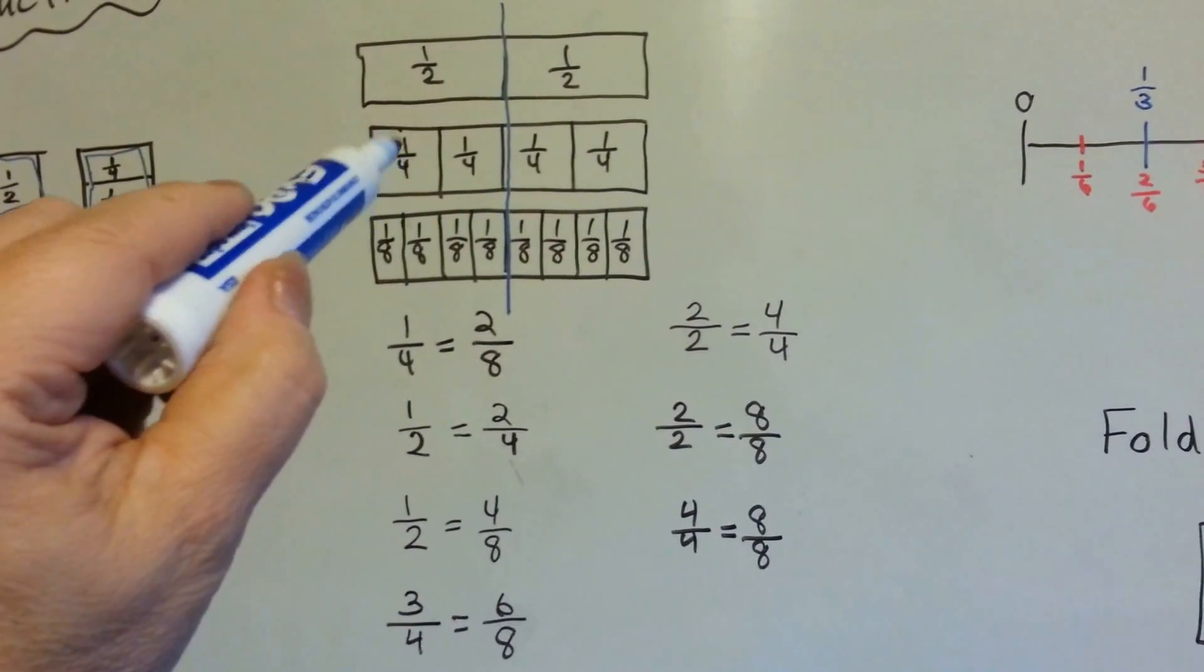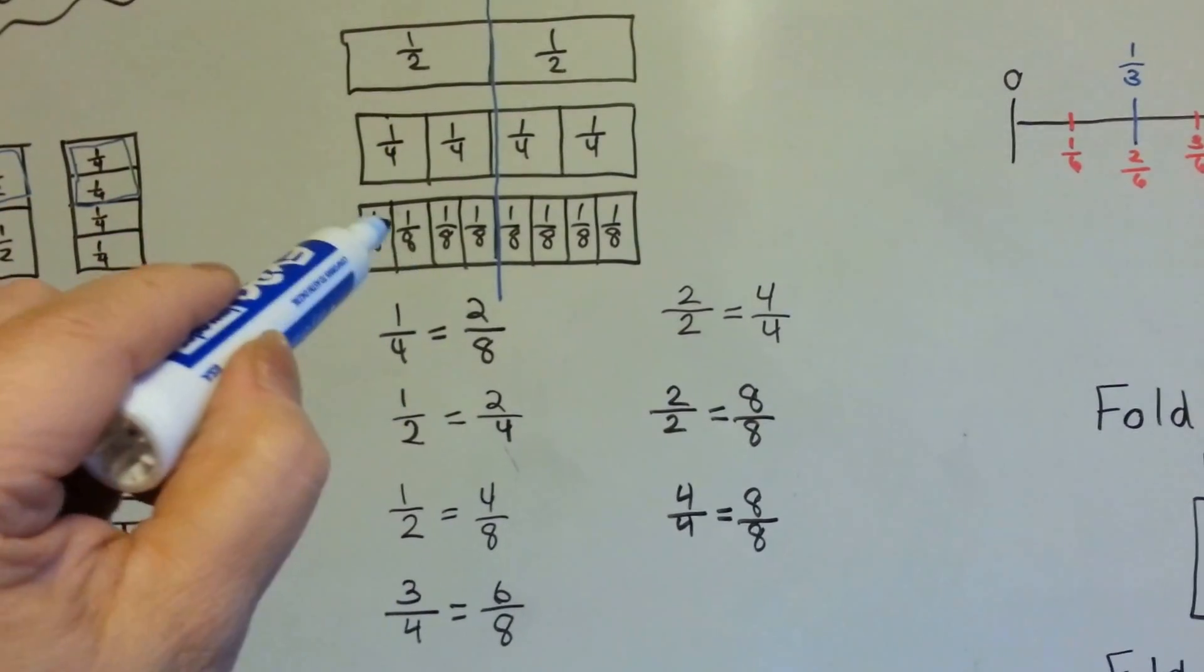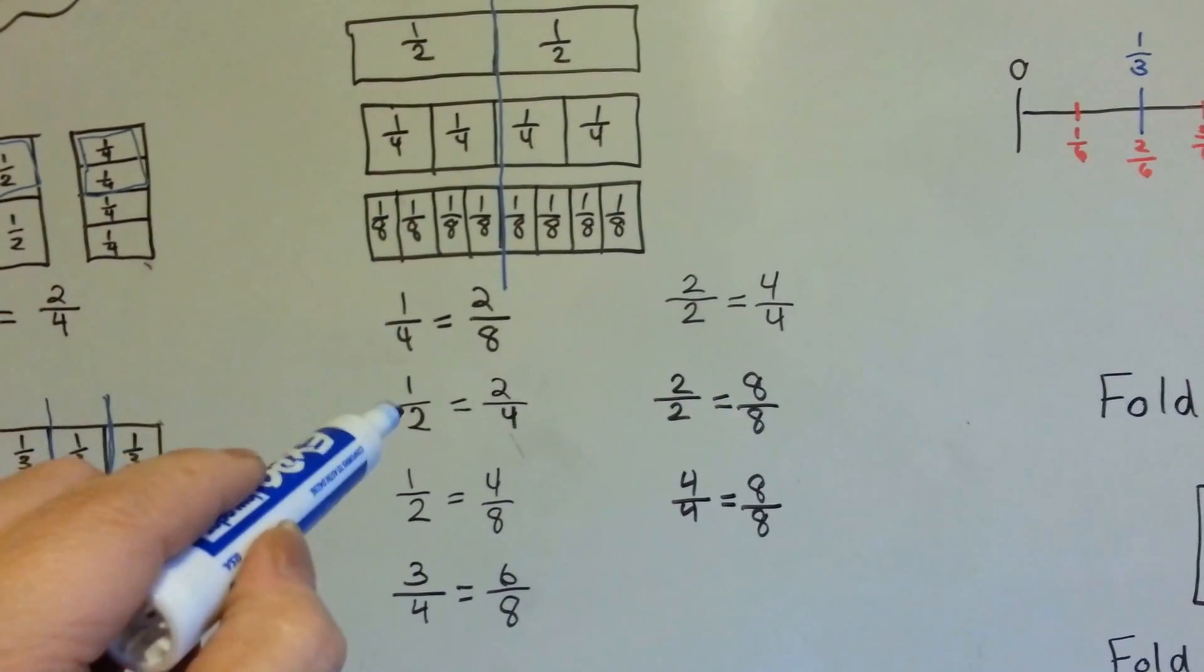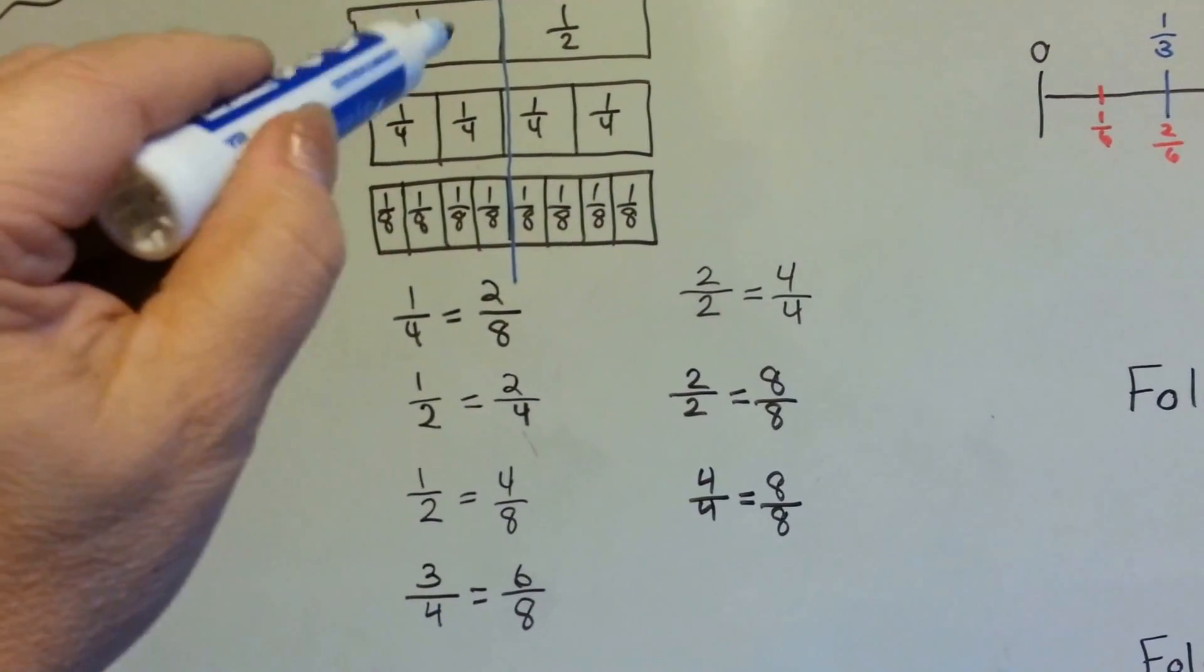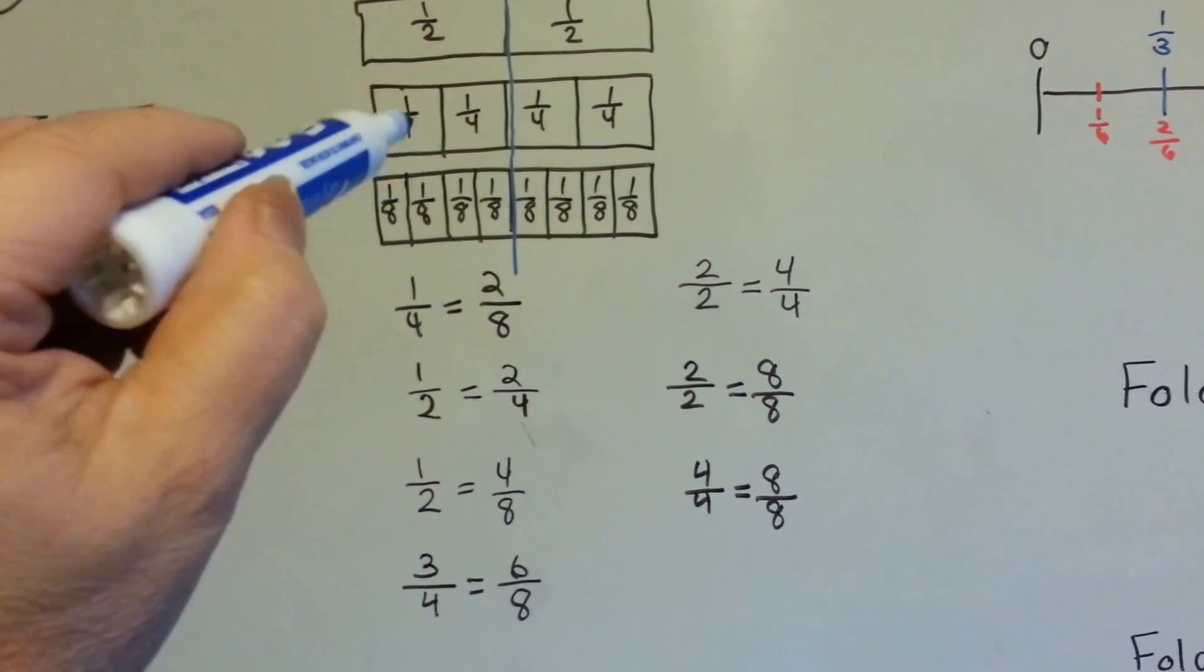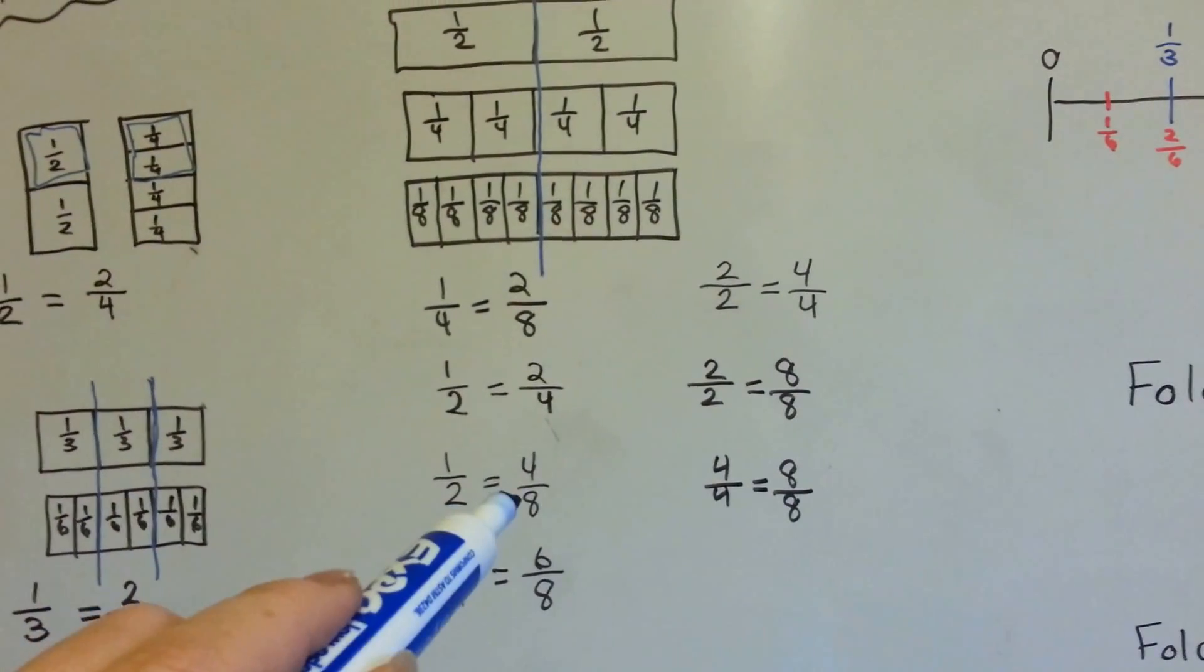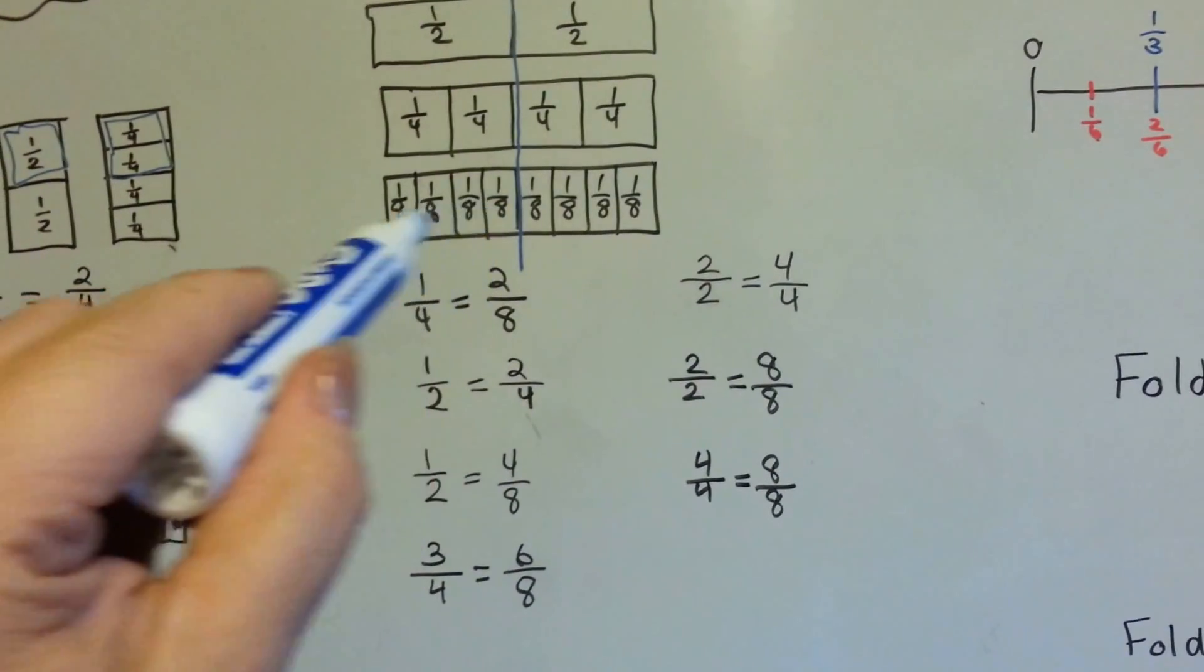One fourth, this little piece here, is equal to two eighths. One half is equal to two fourths. This half is equal to this two fourths. Isn't that cool how that does it? A half is equal to four eighths. This half is equal to these four eighths.